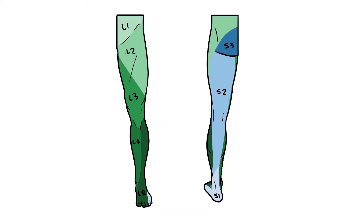So for example, if L3 was damaged we'd expect to lose sensation across this entire area, but it might still receive some sensation at its borders from neighbouring nerve roots. So if you're examining the dermatome, make sure to test sensation near the centre of these areas to ensure you've isolated a single nerve root.